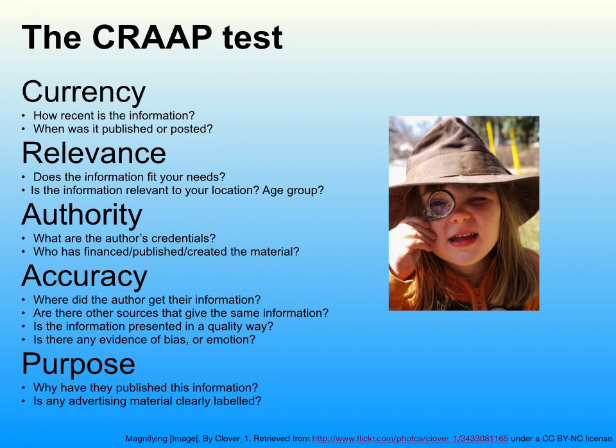Digital literacy is about people being savvy users of ICT resources and the information available out there. It's about understanding that anyone can publish to the internet, and while there's a lot of good stuff out there, there's also a lot of rubbish. So we need to look at a whole lot of things when we're looking for information on the web — both as adults and with our students. Around currency, we need to ask: how recent is this information? Was it published recently or a long time ago?